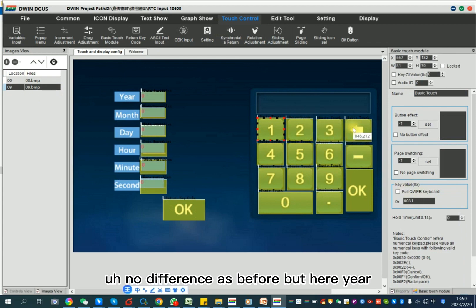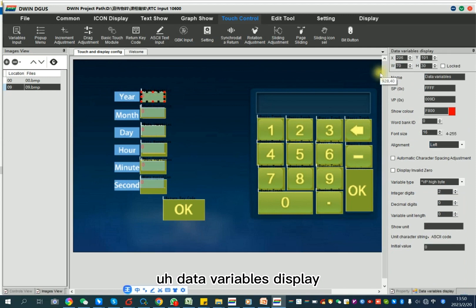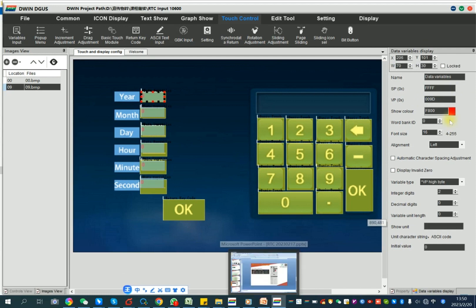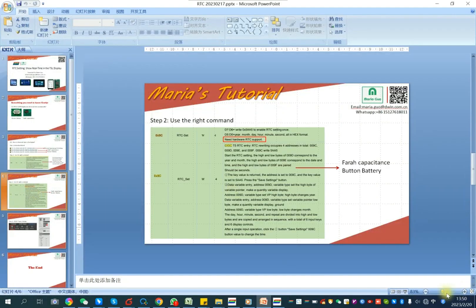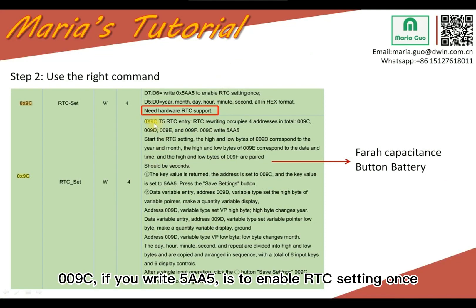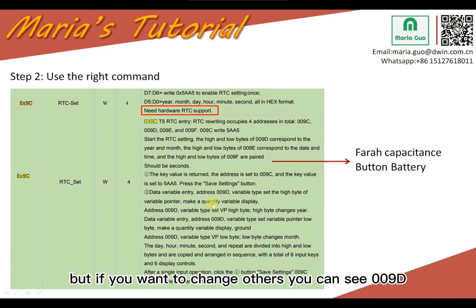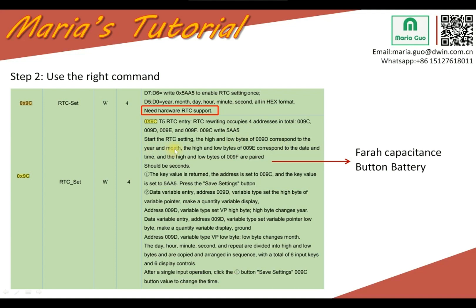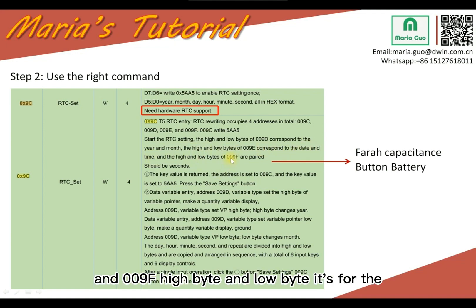On page nine, this is the keyboard. There's no difference from before, but here the VP address for data-available display is different from others. Address 0x009C: if you write 5885, it enables RTC setting. 0x009D high byte is for year, low byte is for month. 0x009E high byte is for date, low byte is for time hour. 0x009F high byte and low byte are for minute and second.